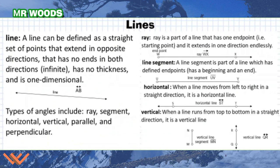Next, here's some vocabulary for lines. A line can be defined as a straight set of points that extend in opposite directions. It has no ends in both directions. It's infinite. Let's take a look at this line here. So I have an arrow at this end, so it's just going off into infinity to the left. And then here, I'm going down into infinity. And if you notice, I have some notation here. So I have this line, I'm going to call it AB.